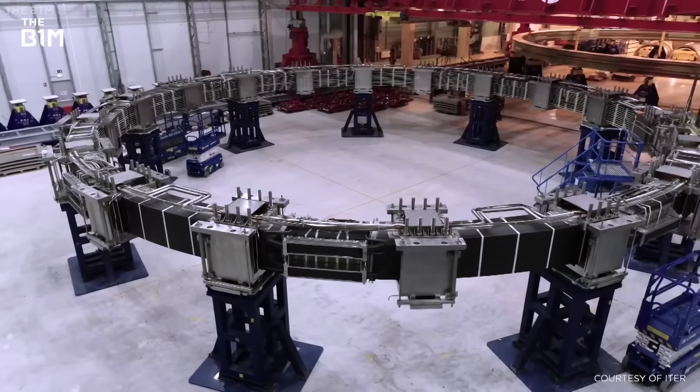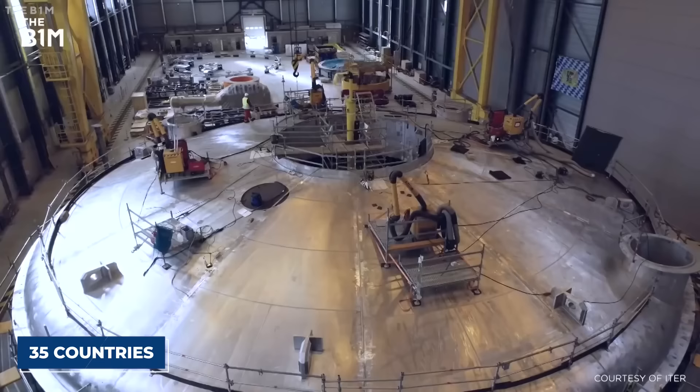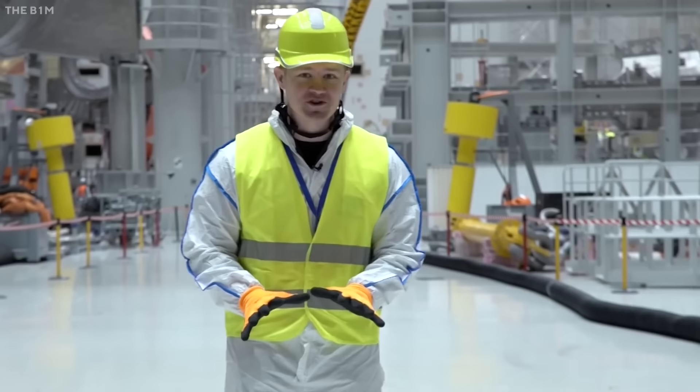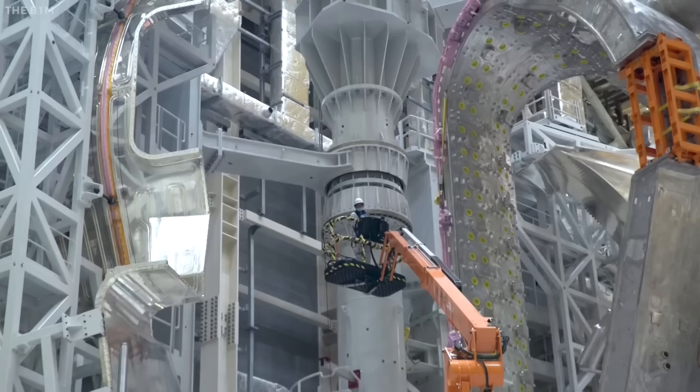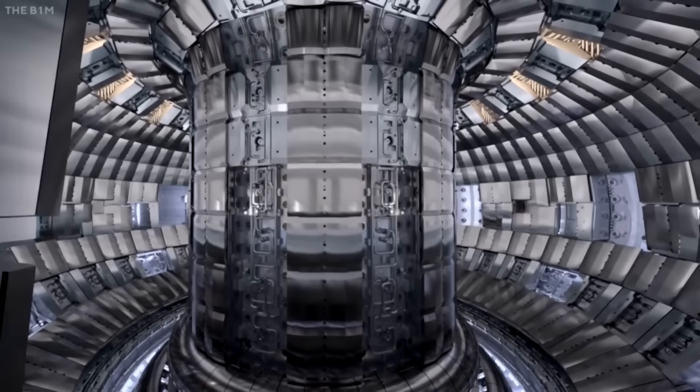The ITER project involves thousands of scientists, engineers, and workers from 35 countries, as well as hundreds of companies and institutions. The ITER project is expected to cost about 20 billion euros and to be completed by 2025, when the first plasma is planned to be achieved. It's a 22 billion dollar science experiment between a whole host of nations all coming together.